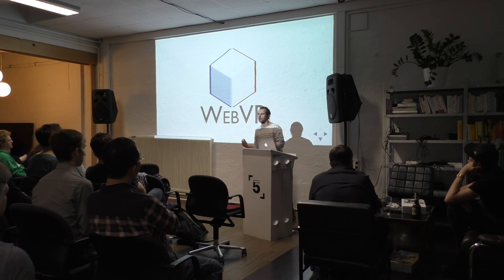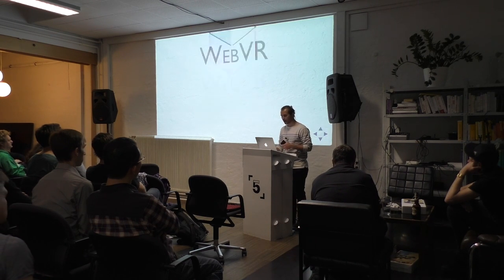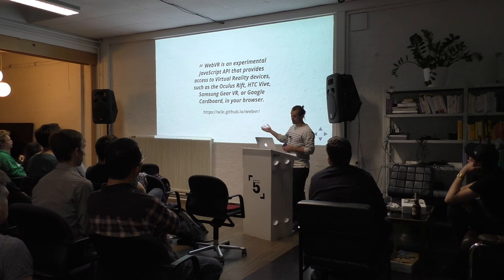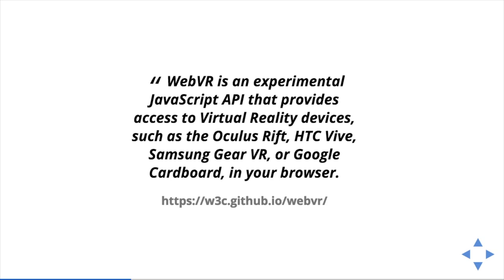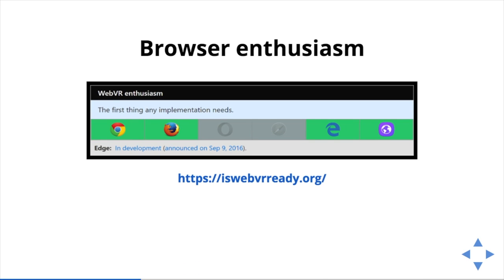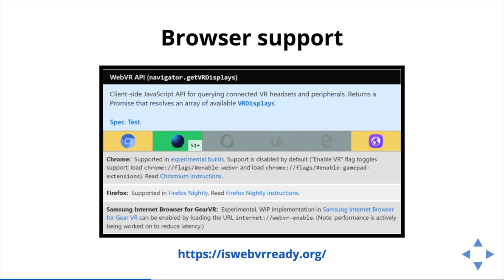What is WebVR? It's a pretty new thing. WebVR is an experimental JavaScript API that provides access to virtual reality devices such as the Oculus Rift, HTC Vive, Samsung Gear VR, or Google Cardboard in your browser. All the VR stuff in your browser — that's amazing. All the browser vendors are pretty enthusiastic. The reality unfortunately is that WebVR is not ready yet — if you take any browser, it's not in there yet.